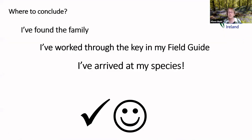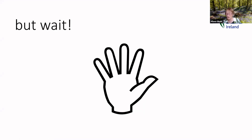So to conclude: I've found the family, I've worked through the key in my field guide, and I've arrived at my species — Slender St John's Wort. But wait — there is one more step.